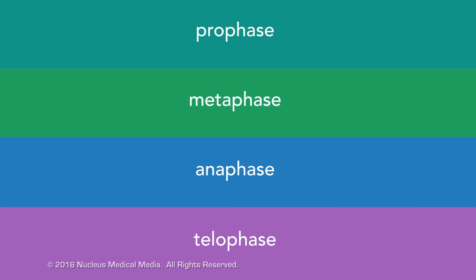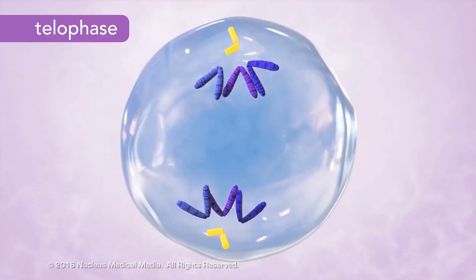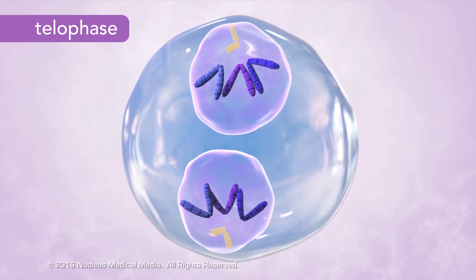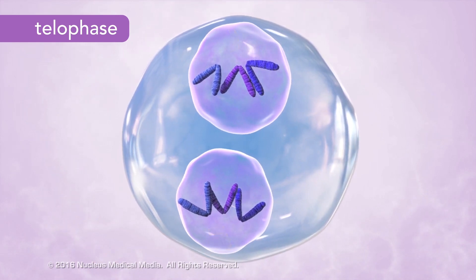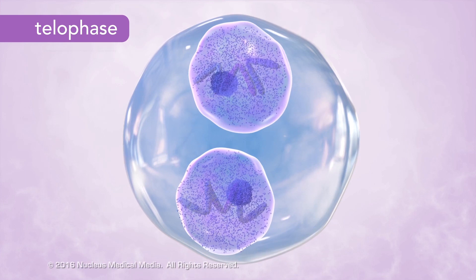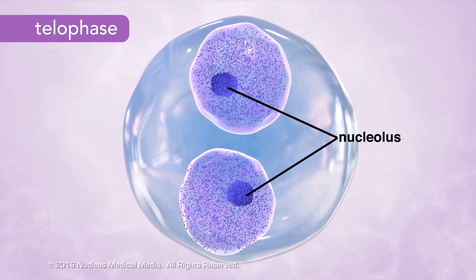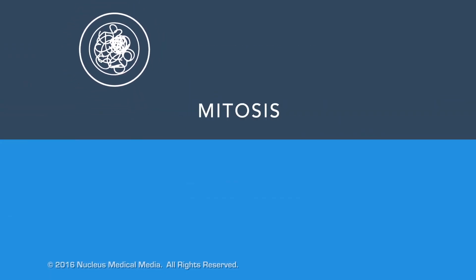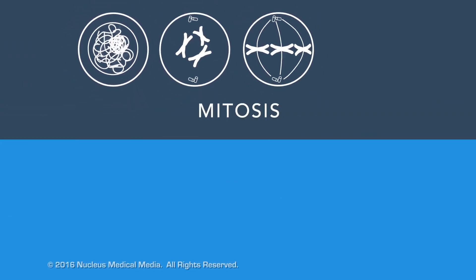Telophase is the final stage of mitosis. In telophase, a nuclear membrane reforms around each set of chromosomes. Then, the chromosomes spread out into chromatin, and the nucleolus becomes visible once again. Mitosis, the division of the nucleus, is now complete.